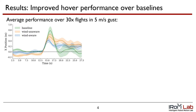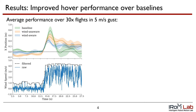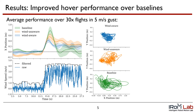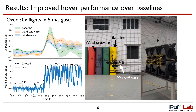Here, the drone seeks to maintain a hover position despite a 5 m/s gust in the positive x direction. Shown below are the raw and filtered wind estimates, measured in flight and used by the wind-aware controller. On the right, we show the trajectories of all 30 flights. Wind-aware control reduces error in maintaining a hover position. In the following overlaid video of representative trials, the wind-aware case is the most opaque, followed by the two baselines.